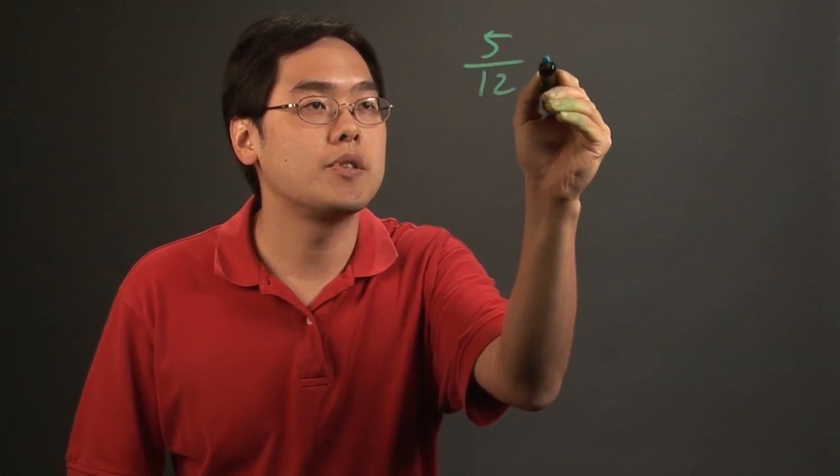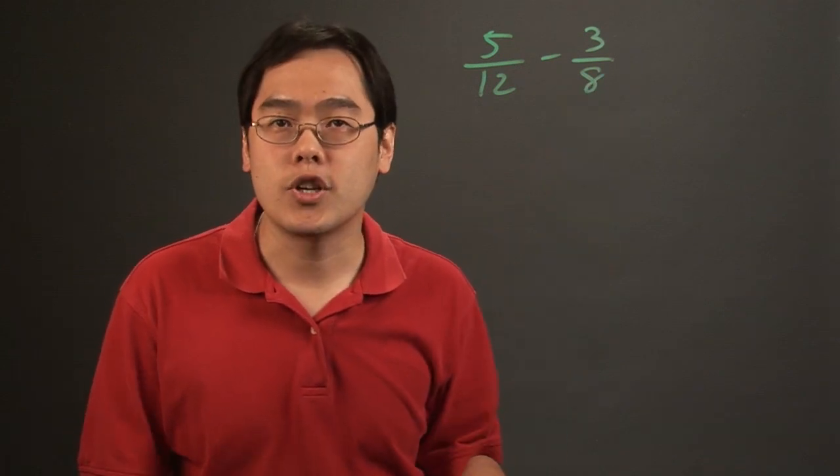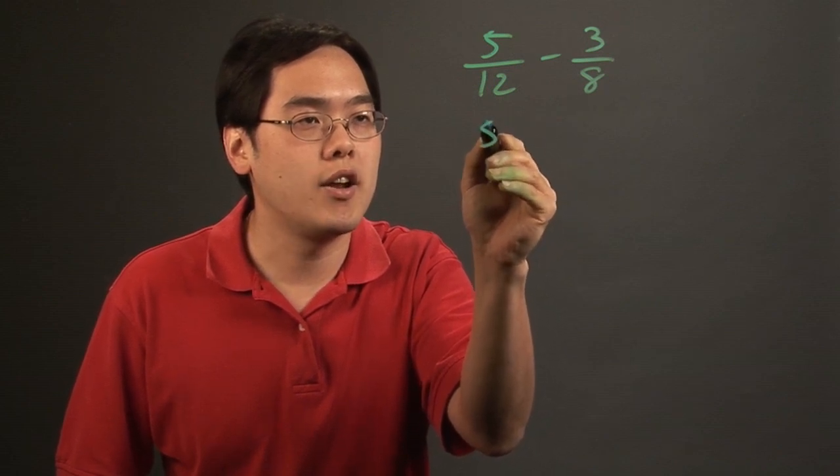Suppose you want to find 5 twelfths minus 3 eighths. You can write it in vertical fashion if you choose to, but you can stay in horizontal fashion.